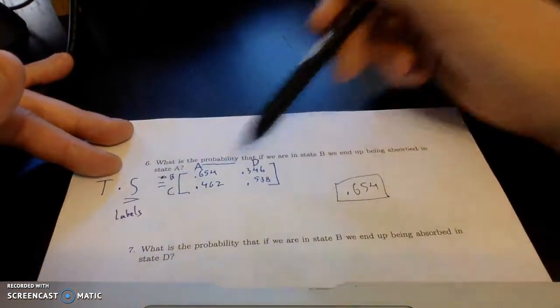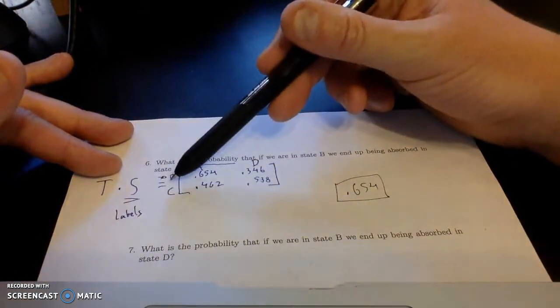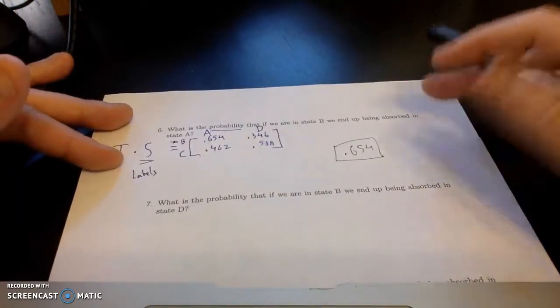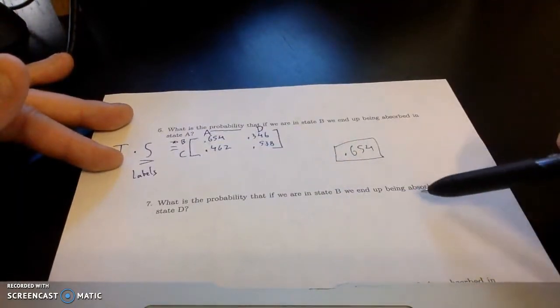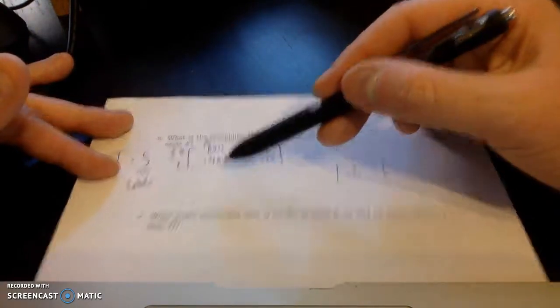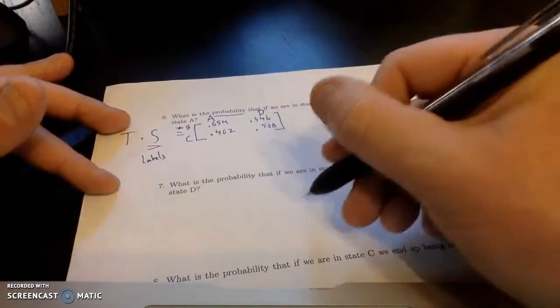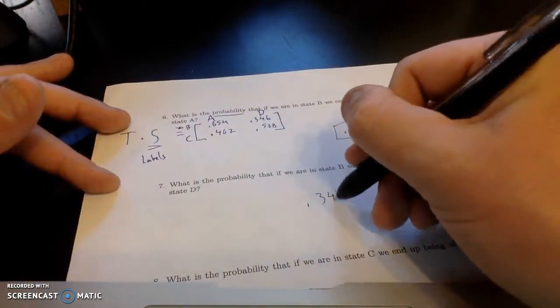So just like we read transition matrices, going from B to A, 0.654. If we are in state B, what's the probability that you end up being absorbed into state D? I'm still looking at this first row, but now I need to go to the second column. That's 0.346.